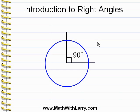This is just a very basic lesson. Later we'll do much more with right angles. For now, just make sure that you recognize what a right angle is, and make sure to memorize the fact that a right angle contains 90 degrees. We'll learn much more about this later.